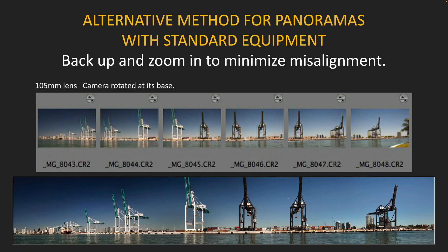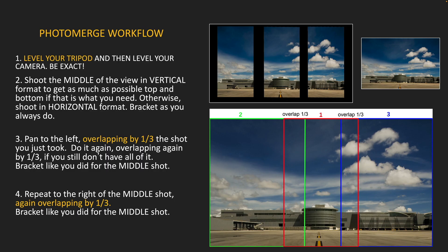If you don't have a perspective control lens and don't want to invest in one of these rails, an alternative is to use more in the telephoto range — 75, 85, 105mm — back up and zoom in on the various parts of your vista in front of you, and put them together with photo merge.